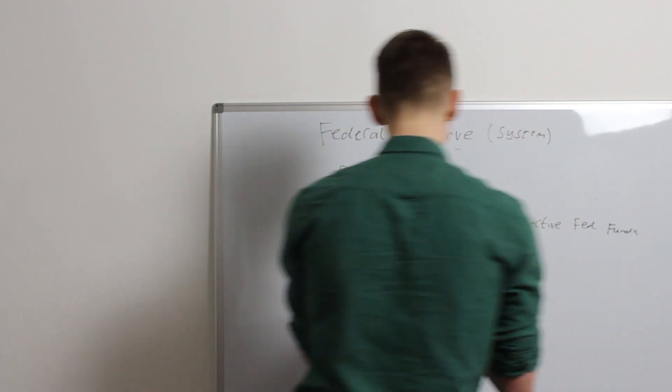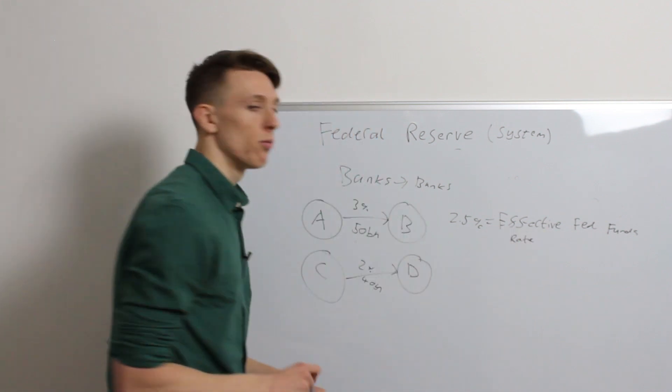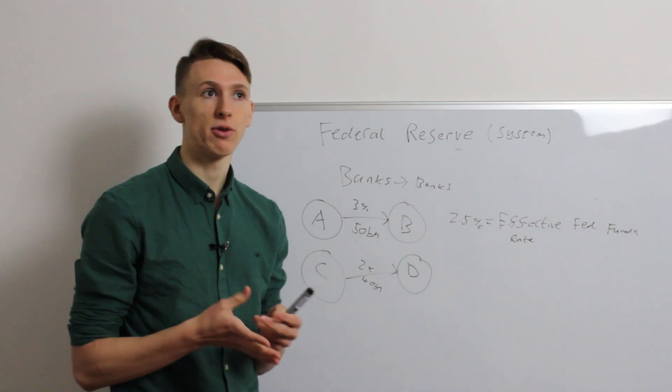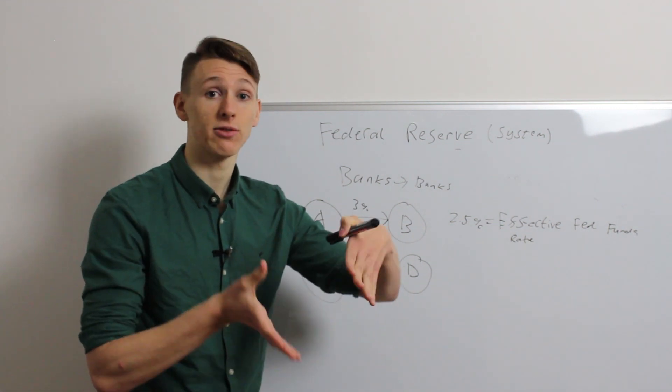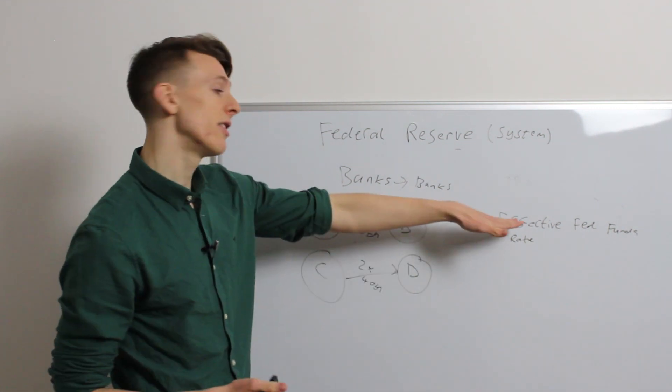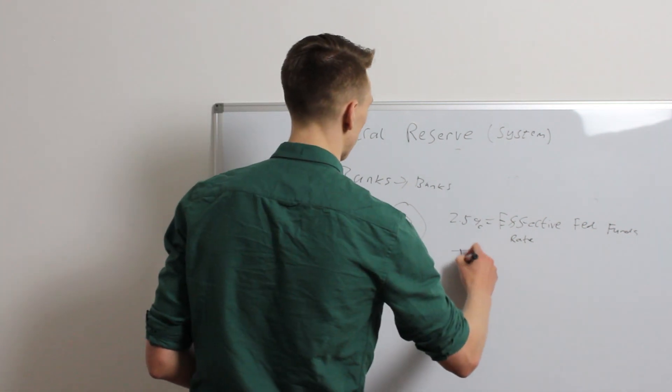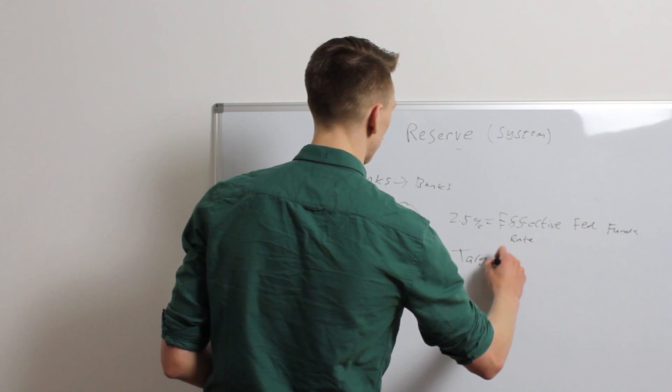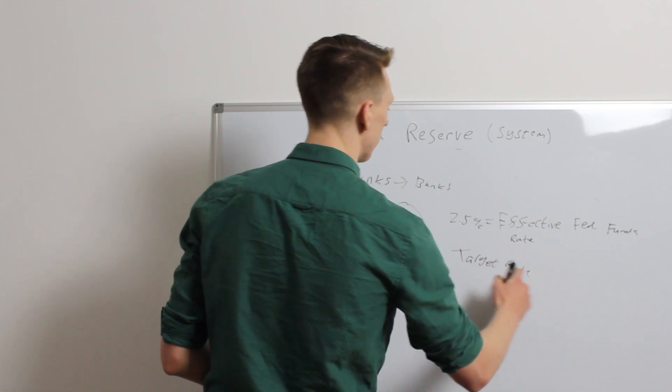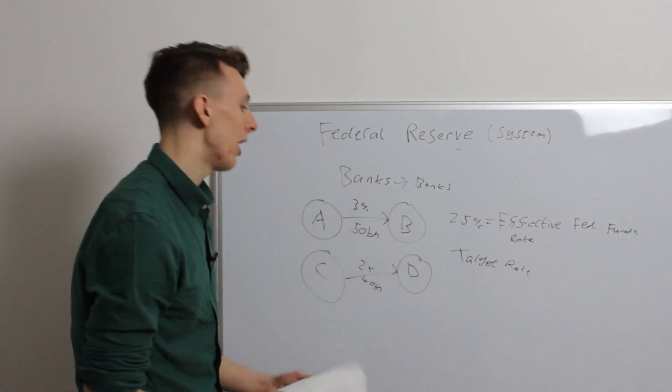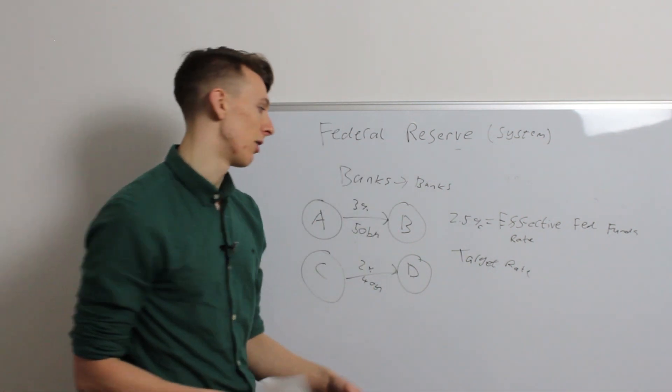And they call this, the average, they call this the effective Fed Funds Rate. Now, why do they have to specify the effective rate? Well, the effective means the one that it's actually at, the interest rate that it is actually at right now. The reason they say that is because they also have something called a target rate. So, they're trying to change this effective rate to their target rate. But, who sets the target rate and how?